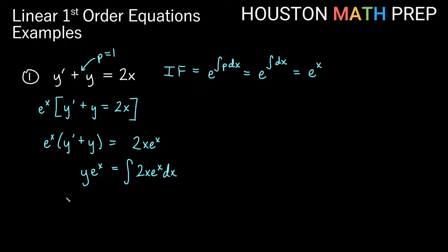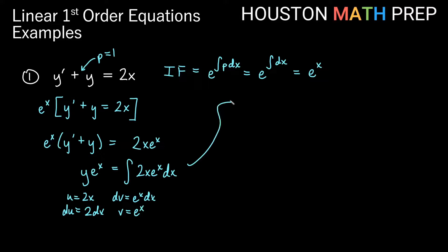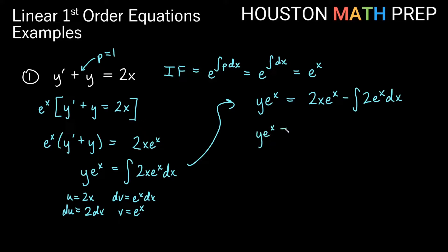We can integrate the right side by parts. Let u equal 2x and dv equal e to the x dx. Then du is 2 dx, and v is e to the x. We still have y times e to the x on the left side. Applying integration by parts: uv gives us 2x e to the x, minus the integral of v du, which is minus the integral of 2 e to the x dx. So we get y times e to the x equals 2x e to the x minus 2 e to the x plus c.